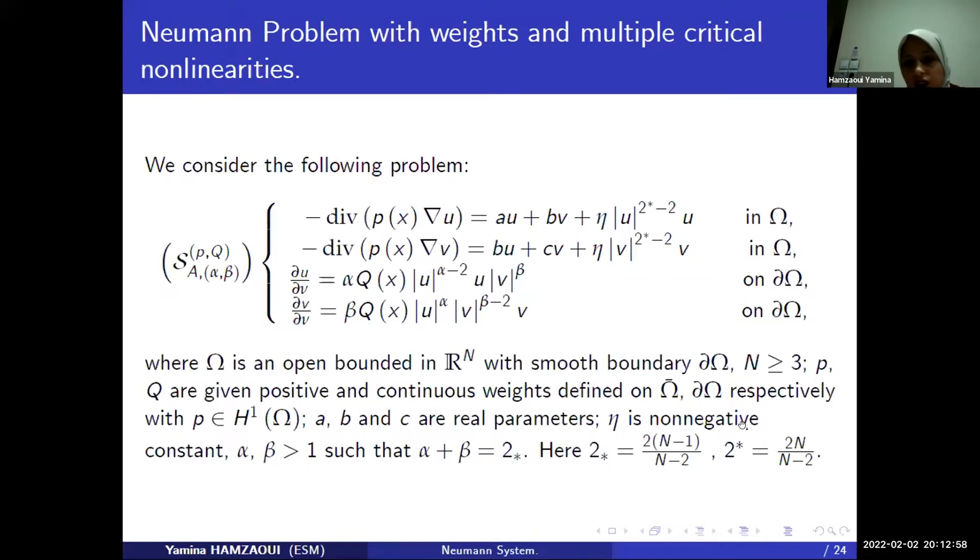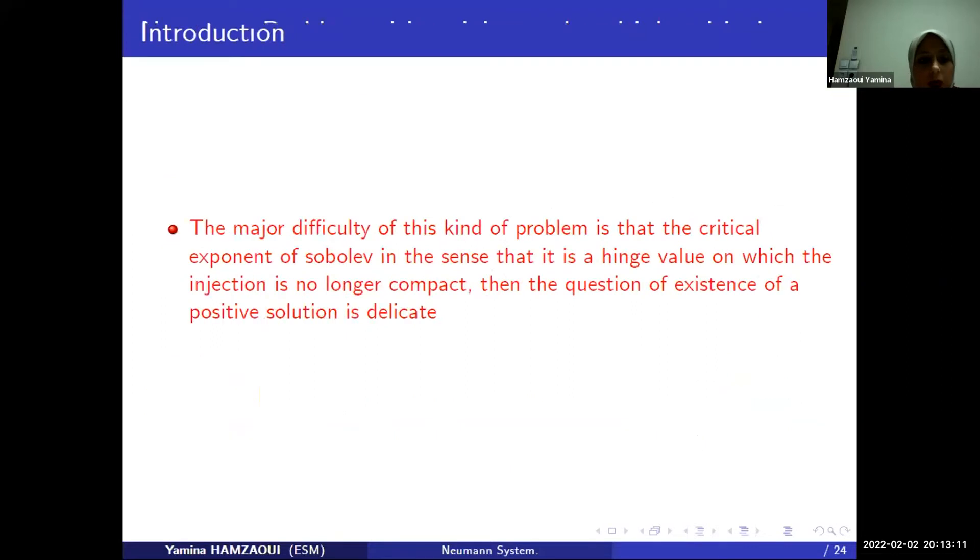And 2 star is the critical Sobolev exponent for embedding H01 into L2 star of omega. This injection or this embedding are continuous, but not compact.